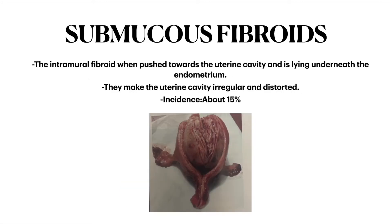What are submucous fibroids? The intramural fibroid, when pushed towards the uterine cavity and lying underneath the endometrium, is called submucous fibroid. They make the uterine cavity irregular and distorted. The incidence is about 15%, and you can see the submucous fibroids here.